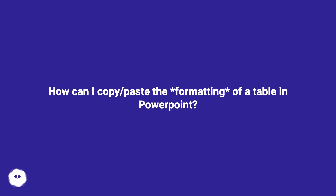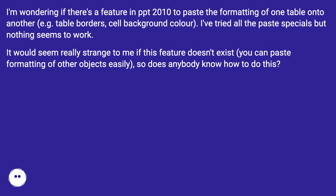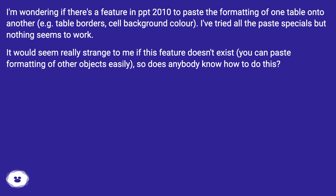How can I copy and paste the formatting of a table in PowerPoint? I'm wondering if there's a feature in PPT 2010 to paste the formatting of one table onto another — for example, table borders and cell background color. I've tried all the paste specials but nothing seems to work. It would seem really strange if this feature doesn't exist, since you can paste formatting of other objects easily, so does anybody know how to do this?